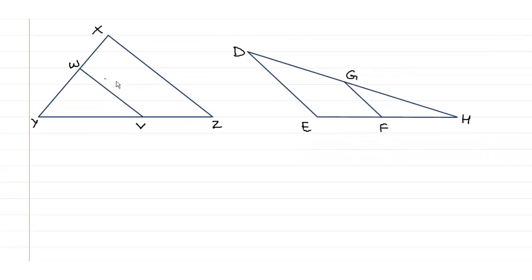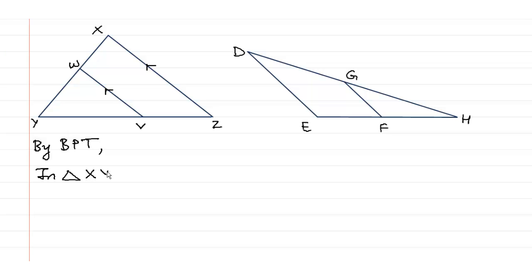Now let us consider triangle XYZ where WV is parallel to XZ. WV is parallel to XZ. If you apply the Basic Proportionality Theorem to triangle XYZ, we should not start BPT from point X — we should rather start it from point Y.